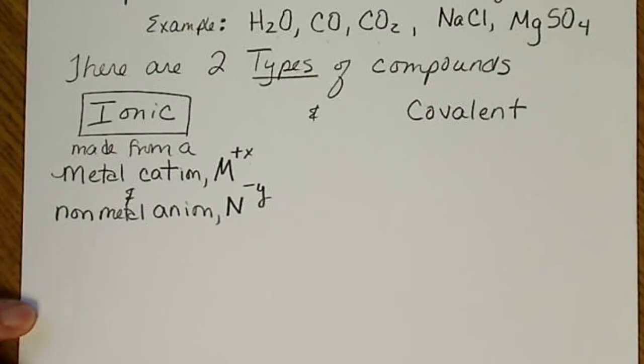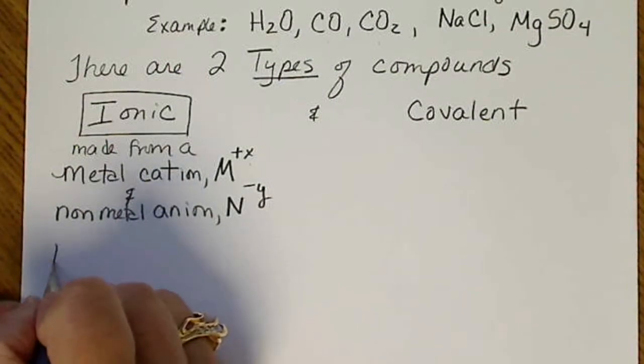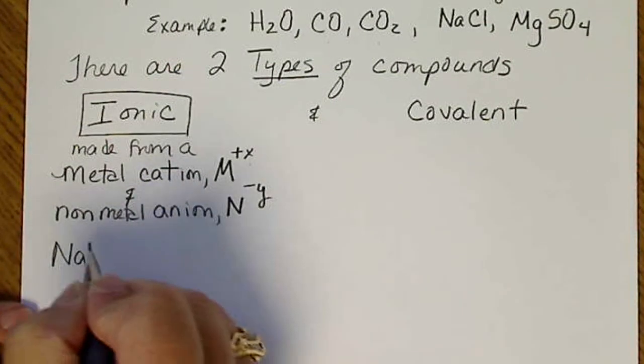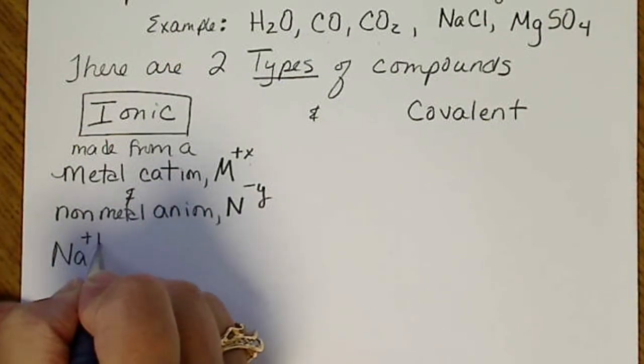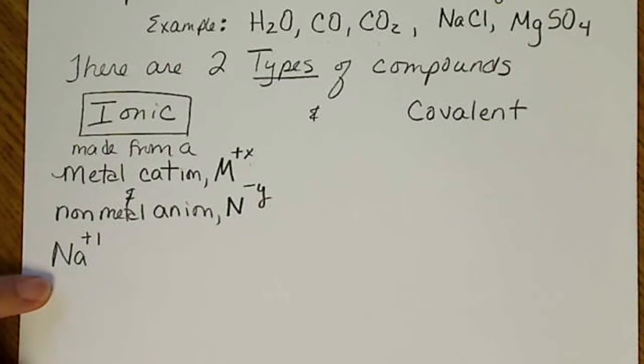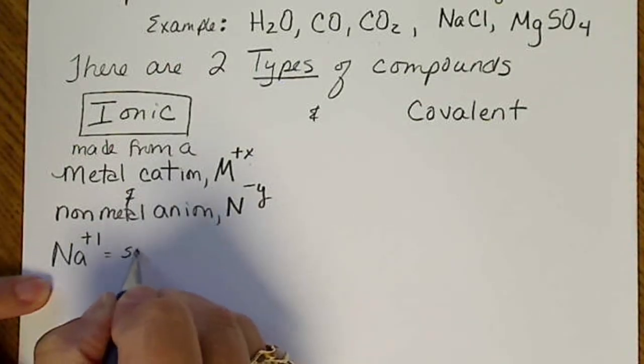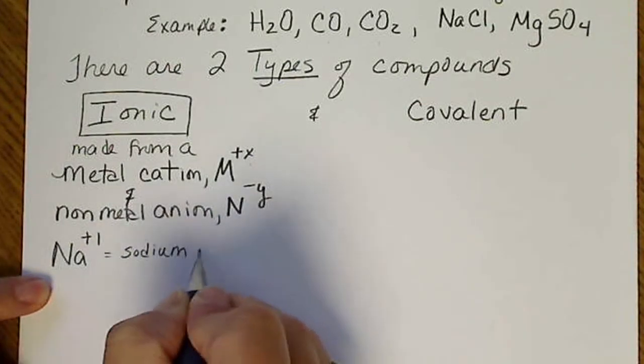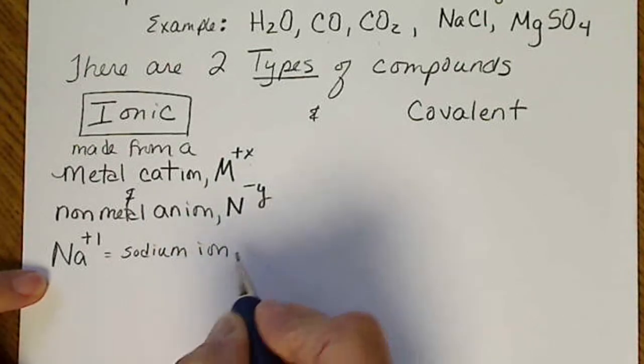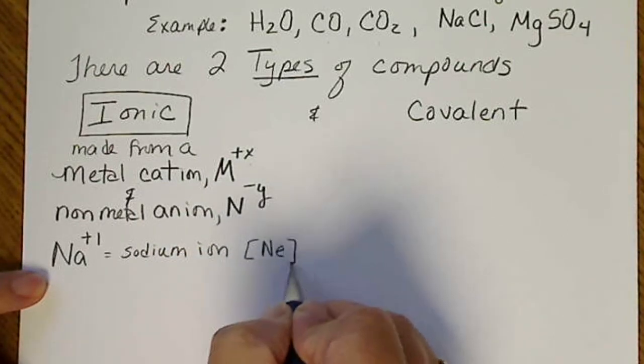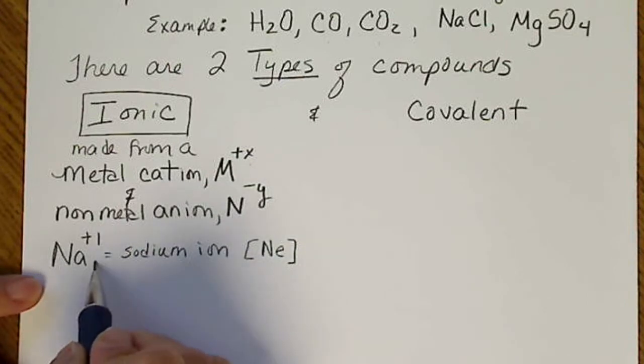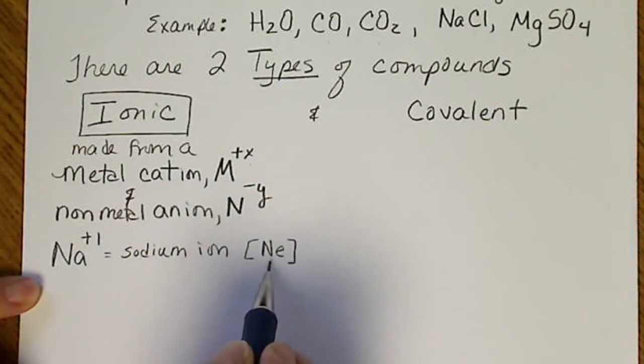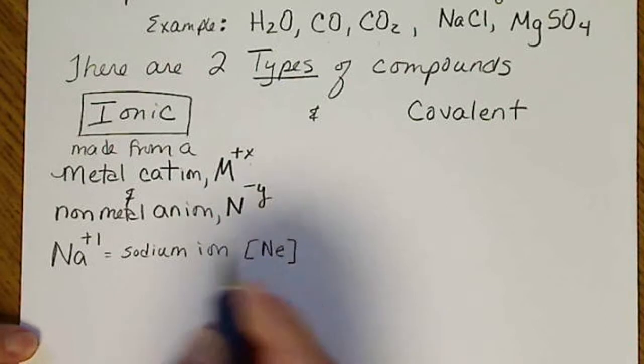The example that we looked at is sodium. Sodium is in column one. It likes to lose an electron to become plus one. So this is the sodium ion. Remember, it's noble gas configuration. It looks like neon. A sodium ion is very happy or very stable because it has eight electrons around it now.